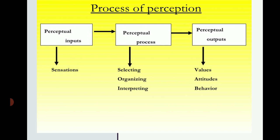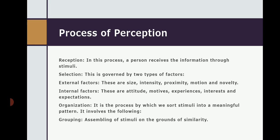If you have a lot of stimuli, you organize them so that you can better interpret them. Then the next step is interpreting — you interpret using your mental efforts and ability, examine them, and then convert them into perceptual output. Based on that, your behavior and outcome are determined. This is the complete process of perception.